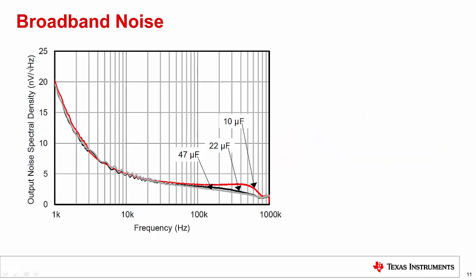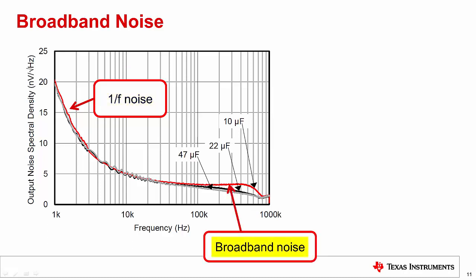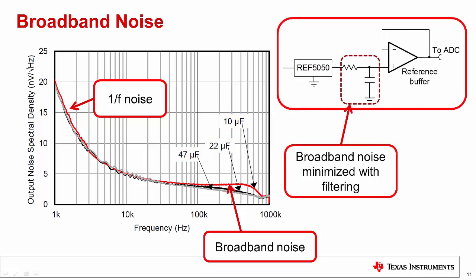This plot shows the output noise spectrum of the reference. At low frequencies, the plot shows the 1/f noise component. At higher frequencies, the flat portion of the curve shows the broadband noise of the reference. Broadband noise can be minimized by filtering the reference — one approach is to add a larger filter capacitor at the output. Another approach to minimizing broadband noise is to use an RC filter with a reference buffer, which allows setting the cutoff frequency very low. Note that this method is not practical without a reference buffer, as the series resistance will limit the dynamic output impedance of the reference.